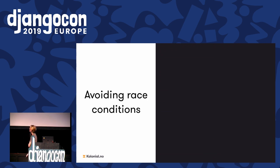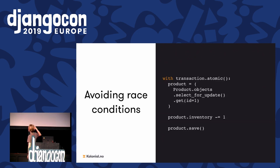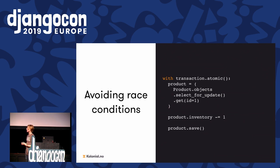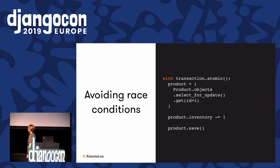Another quick tip: you can use the database to avoid race conditions. select_for_update will, for any row returned by the query, keep a lock for the duration of a transaction. So when I say product.inventory minus one, I can be sure that no other query has modified the same object in the database. Then I can safely save. When the transaction ends — in this case when the with block exits — it will release the lock in the database. It's a bit heavy, so if you can model something differently maybe consider it, but it's worth knowing it's available.